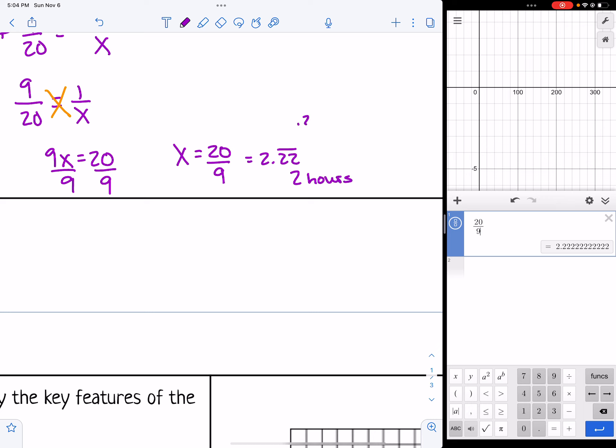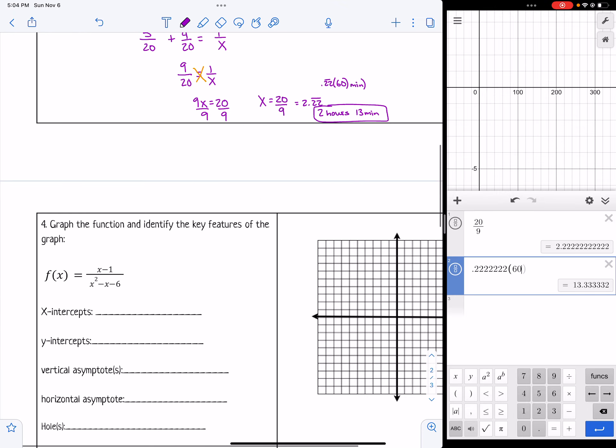So 2.2 repeating would be 2 hours. And then what you've got to do is take the 0.2 repeating and multiply that by 60 minutes to get how many minutes it would be. So I'm going to say 0.2 and carry it out a little ways times 60 which gives me 13. So about 2 hours and 13 minutes. And I'm going to go ahead and round it just to those minutes. I'm not going to worry about seconds.